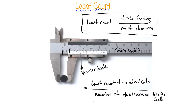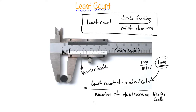The least count of the main scale: we have 10 mm over 10 divisions, which gives 1 mm. This is the least count of the main scale. The number of divisions on the vernier scale is 10. So the final result is 1 mm divided by 10, which gives 0.05 mm — this is the least count for the vernier scale.